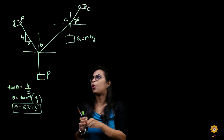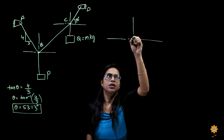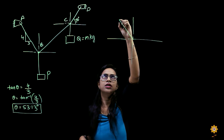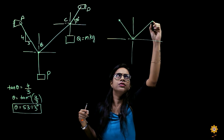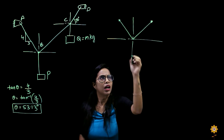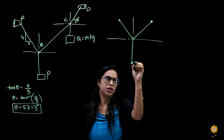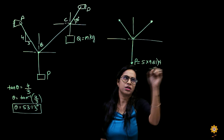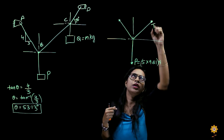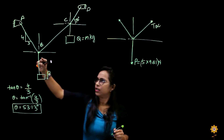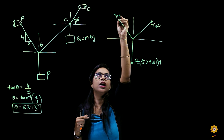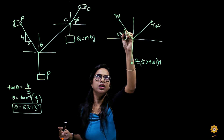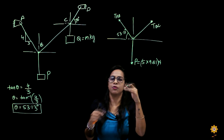First, I'll draw for point B. This is my point B — the chords are in tension. I have string A, string BC, and the weight of P. My P is 5 kg, so it is 5 into 9.81 newtons. This would be the tension in chord BC, that is TBC, and this would be the tension in chord AB, that is TAB. This angle we found to be 53.13 degrees. This is the free body diagram for point B.